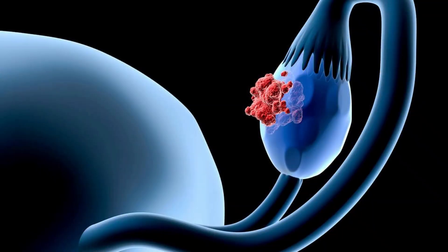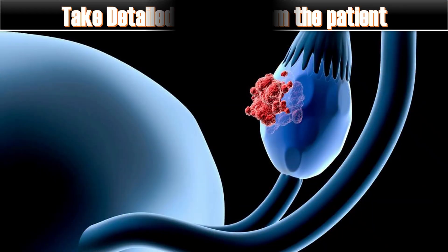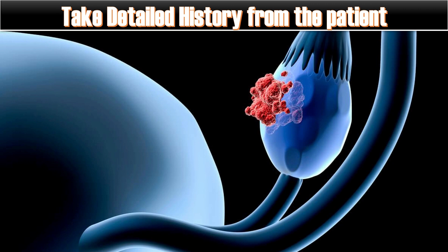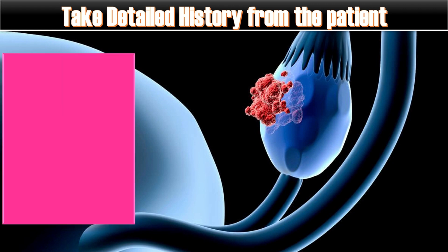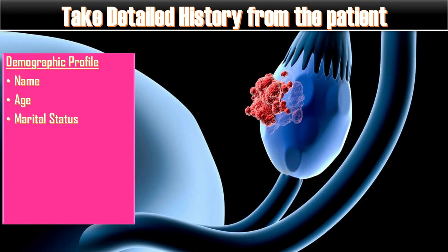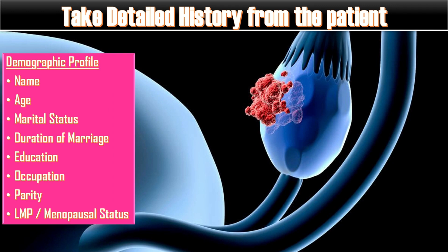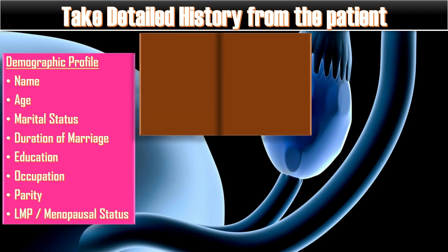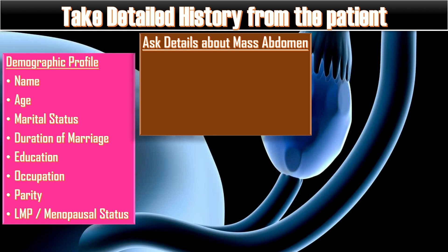In such a case, first of all, take a detailed history from the patient. In the demographic profile, ask about name, age, marital status, duration of marriage, education, occupation, parity, last menstrual period, and menopausal status. Ask details about the mass abdomen.